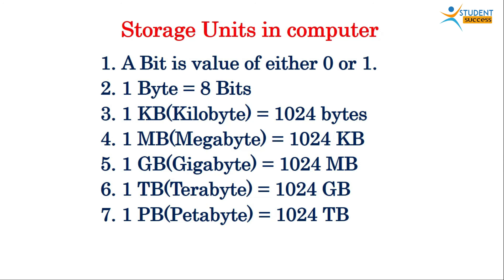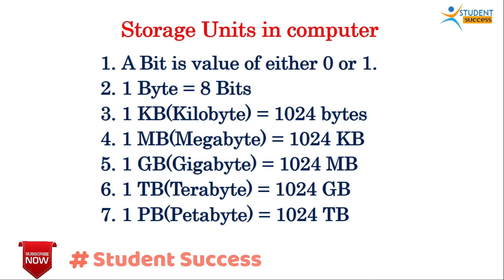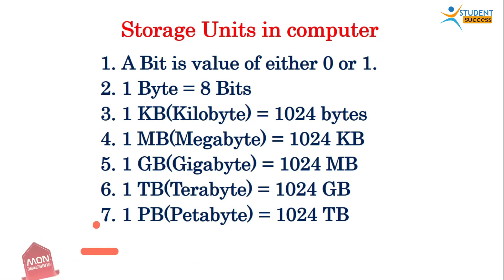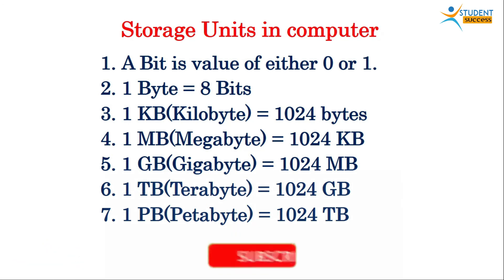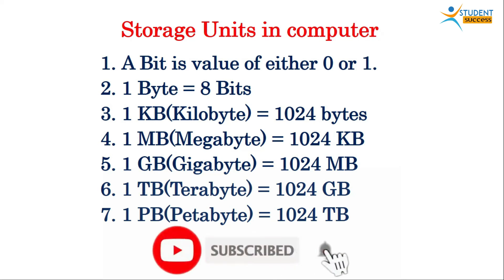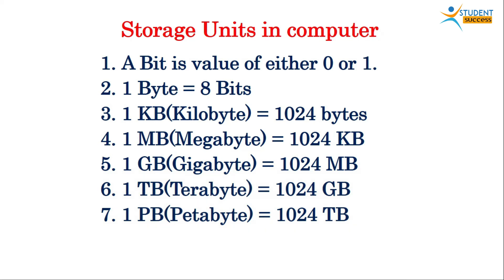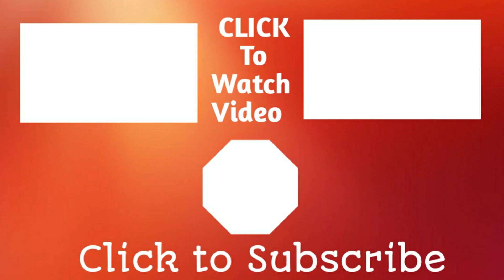One megabyte (MB) consists of 1024 kilobytes. One gigabyte (GB) consists of 1024 megabytes. One terabyte (TB) consists of 1024 gigabytes. One petabyte (PB) consists of 1024 terabytes. Thank you and have a nice day.